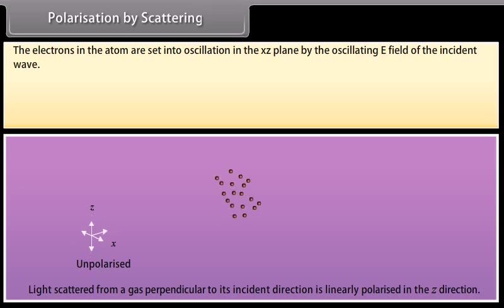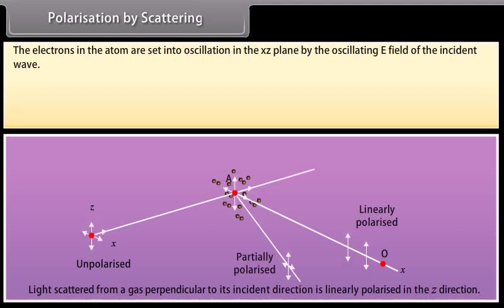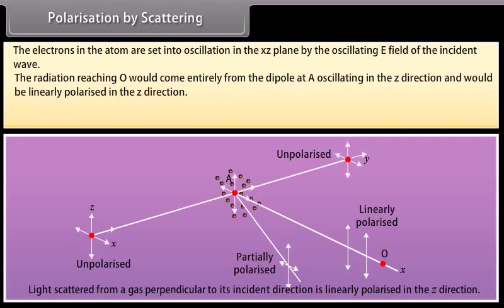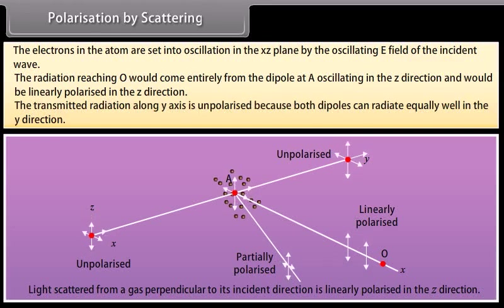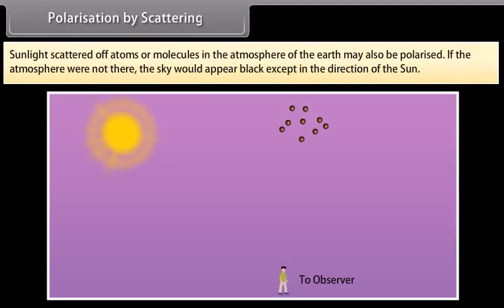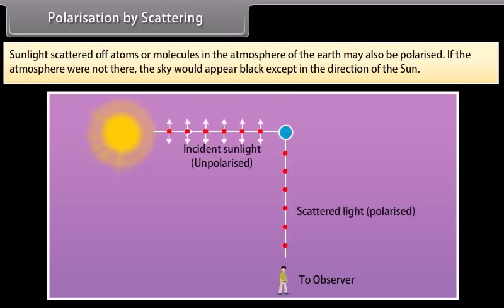Consider unpolarized light traveling along the y-axis striking a gas atom at A. The electrons in the atom are set into oscillation in the x-z plane by the oscillating electric field of the incident wave. The radiation reaching O comes entirely from the dipole at A oscillating in the z-direction and is linearly polarized in the z-direction. The transmitted radiation along the y-axis is unpolarized because both dipoles can radiate equally well in the y-direction. Sunlight scattered off atoms or molecules in the atmosphere may also be polarized; without the atmosphere, the sky would appear black except in the direction of the sun.